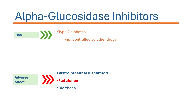To summarize, alpha glucosidase inhibitors such as acarbose prevent or delay the degradation of carbohydrates, so blood sugar levels do not rise immediately after a meal — the rise is delayed. The main adverse effects are GI-related, including bloating and flatulence. That concludes this tutorial on alpha glucosidase inhibitors. Thank you.